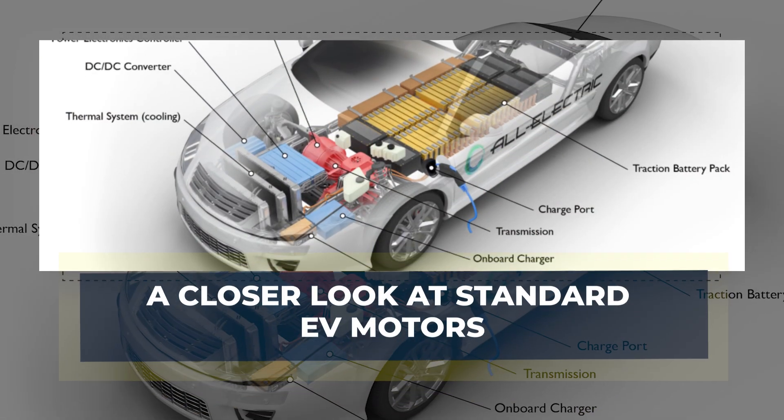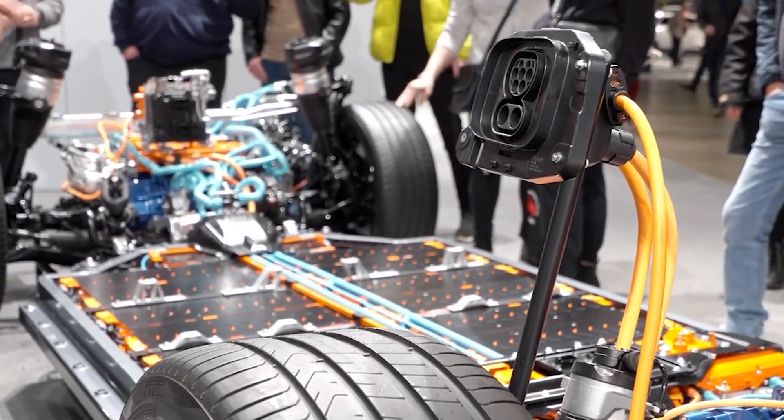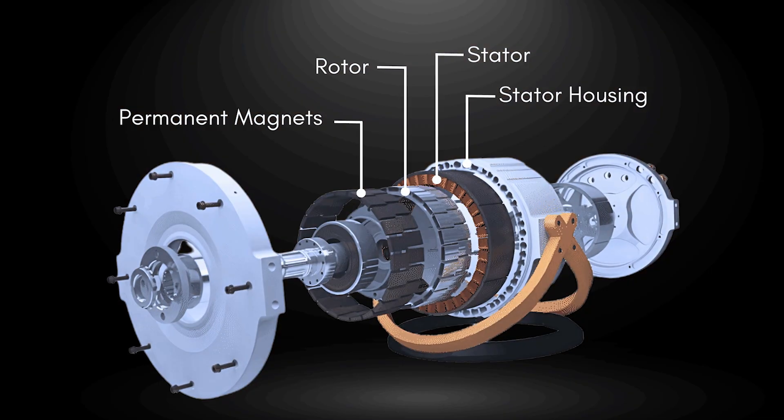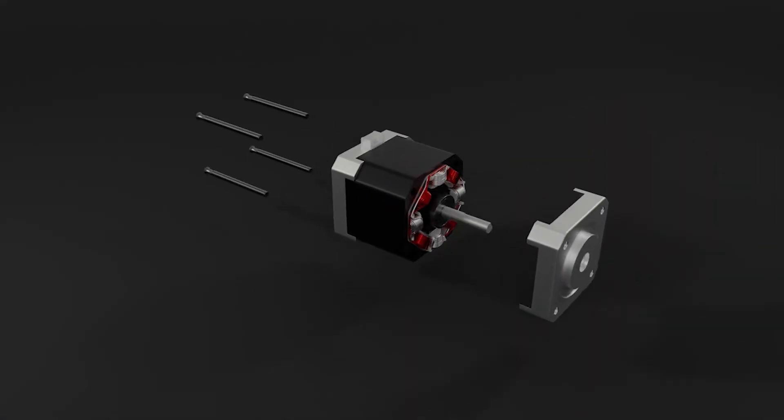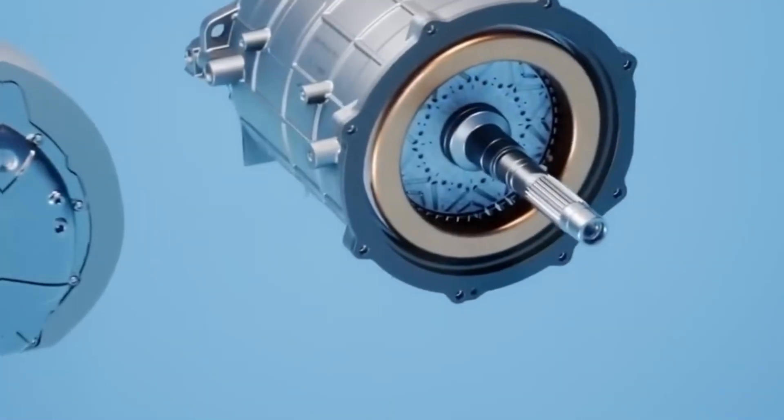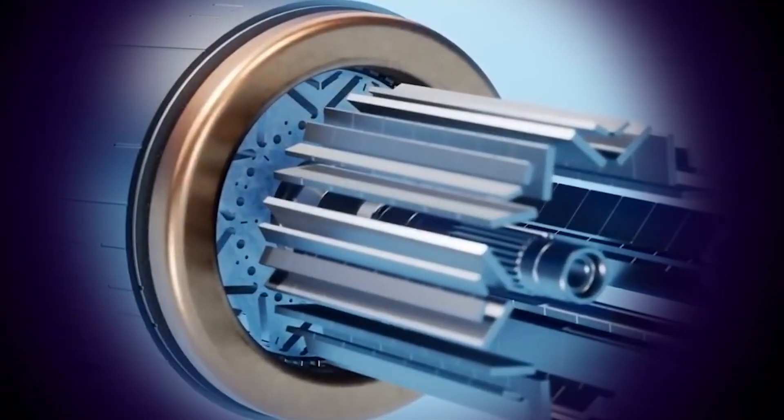A closer look at standard EV motors. To understand why DeepDrive's solution matters, it helps to walk through how a typical electric vehicle motor works. Most EVs today use a radial flux permanent magnet motor. Inside this motor, the stator remains fixed while the rotor rotates inside or around it. The stator contains copper windings that carry a three-phase alternating current.